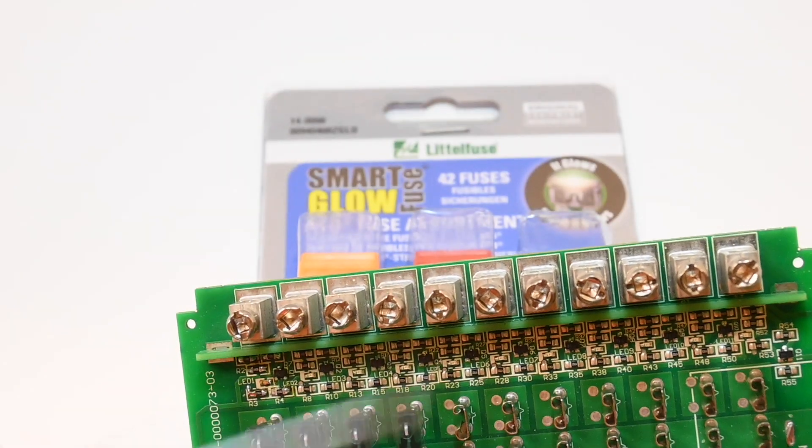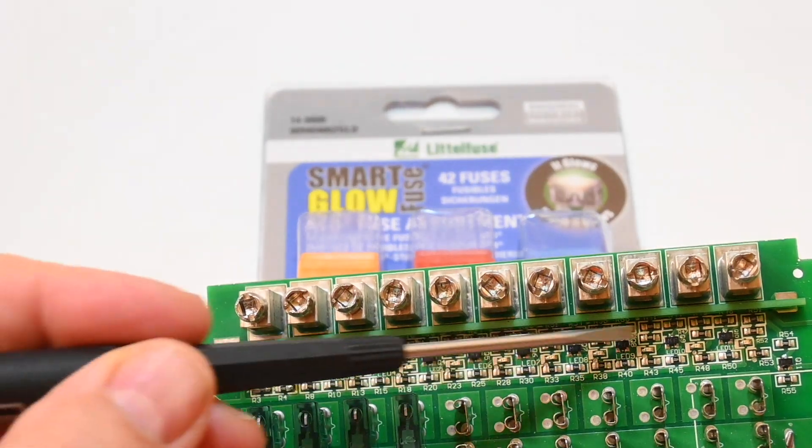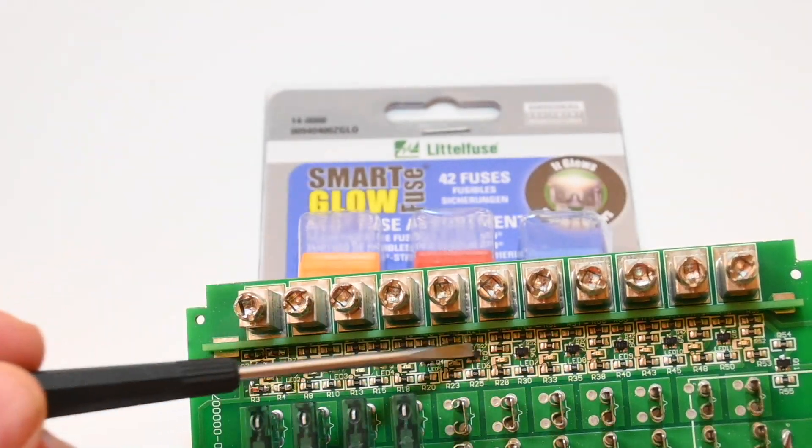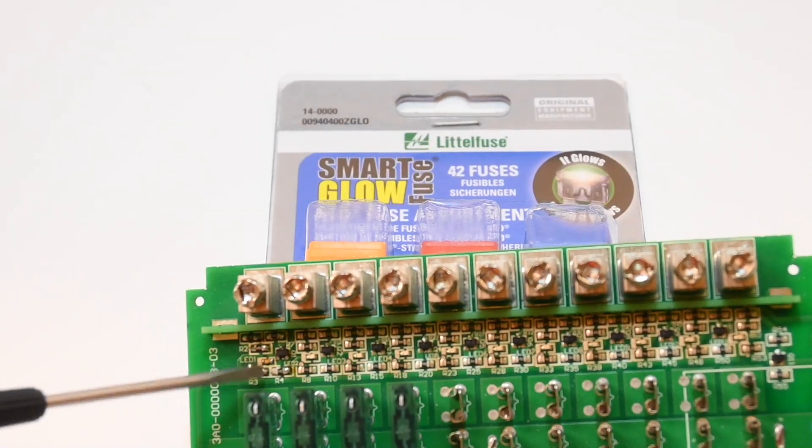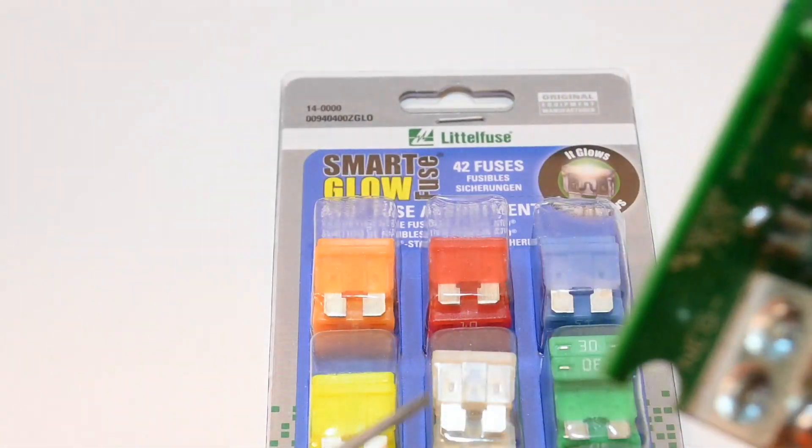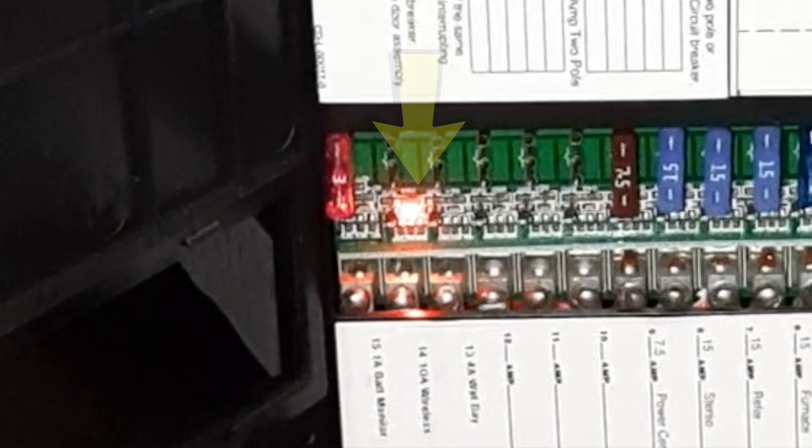However, realize if you have a WFCO panel like this, they have an indicator circuit along the top here that will light up just like this one will. So you may already have that type of indicator in your RV and not know it.